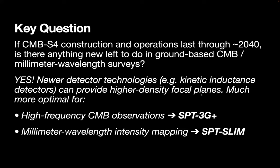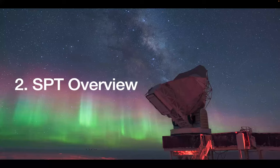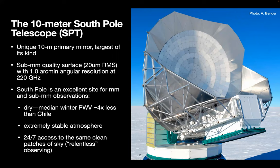Both projects — SPT-3G+ for high-frequency CMB and SPT-SLIM for millimeter wavelength intensity mapping — are going to be deployed on the 10-meter South Pole Telescope. SPT is a relatively unique telescope: the largest dedicated CMB telescope in the world, giving it excellent angular resolution of about half an arcminute at 220 gigahertz, with a high-quality surface that allows it to observe into the sub-millimeter.